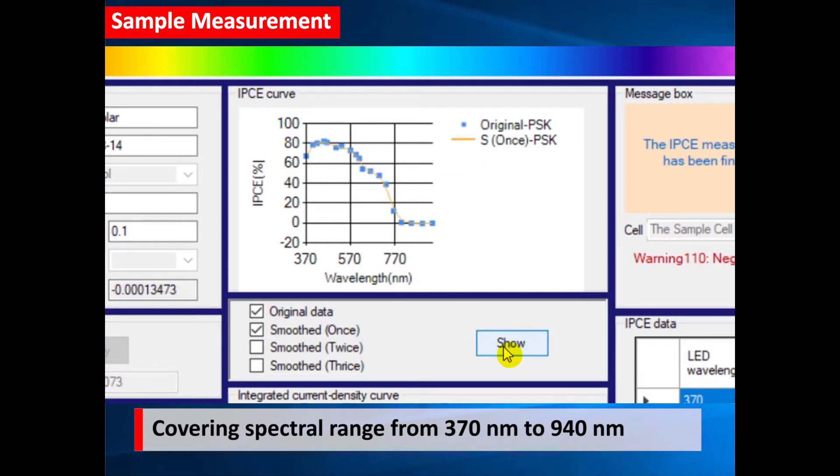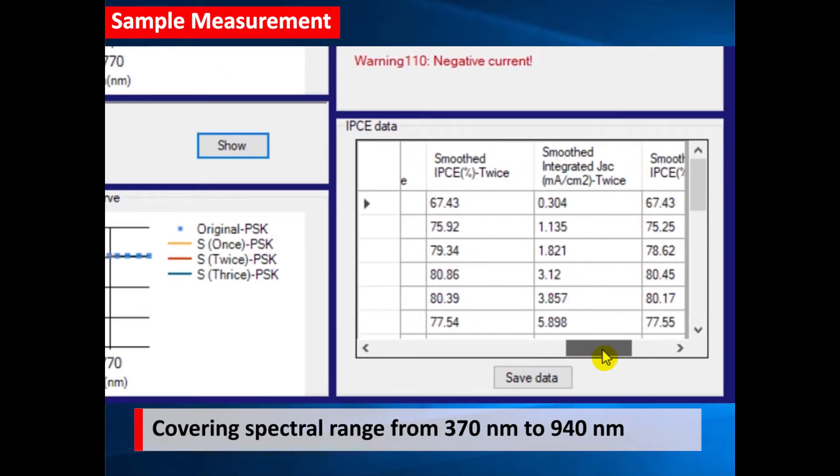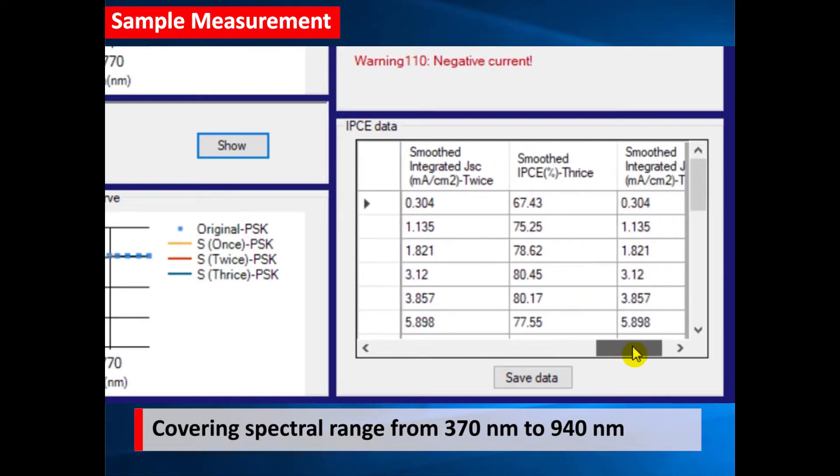You can easily smooth the data once, twice, or three times. The data is tabulated in this window, showing all the measured data, including the light intensity at each wavelength, as well as measured and smoothed data.